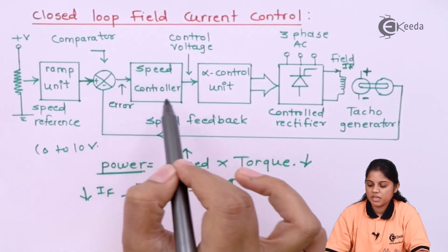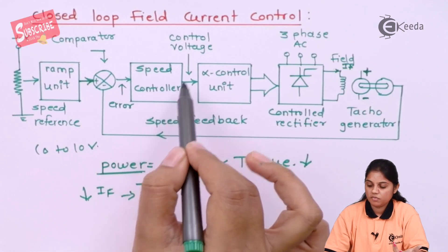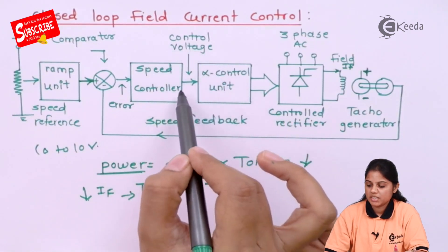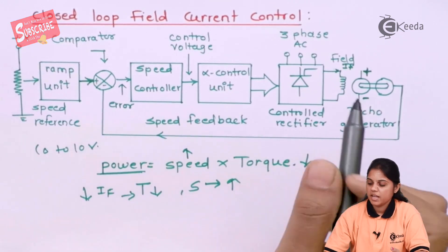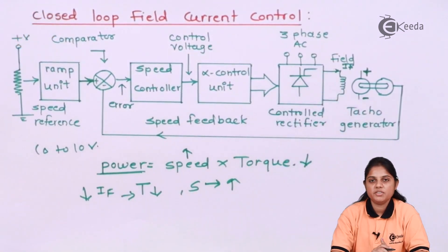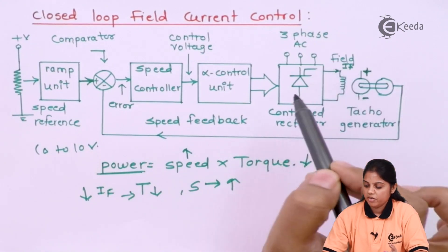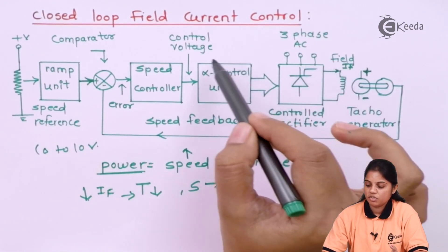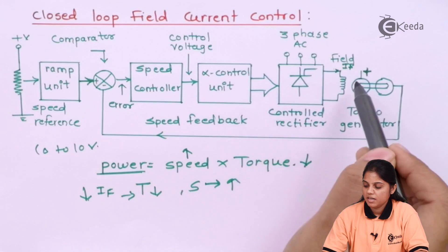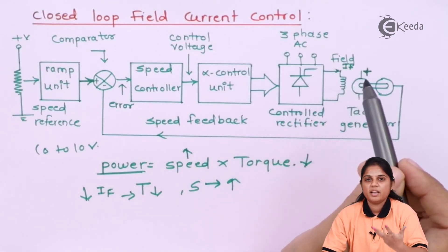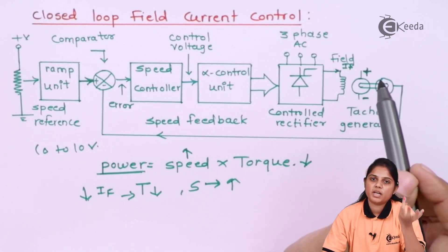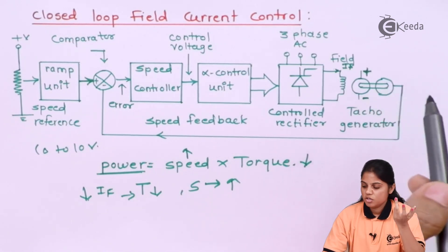That error is given to the speed controller. Then the speed controller will produce a control voltage that is given to the alpha control unit. That will change the firing angle of the thyristor and then thyristor operation will change to vary the current. If thyristor operation changes with the help of change in firing angle, the current will also either increase or decrease. And depending on that, if current increases your speed will decrease, but if your current decreases your speed will increase.